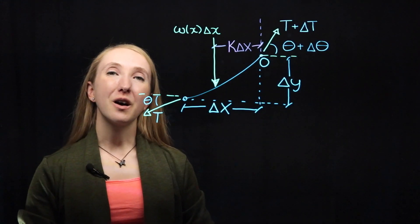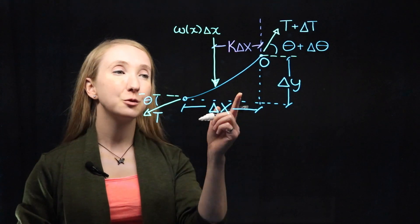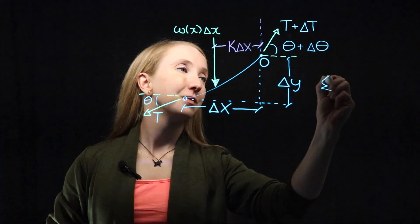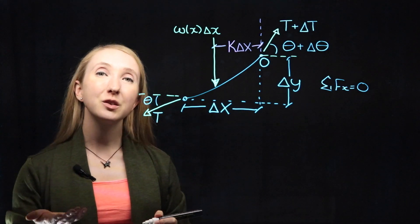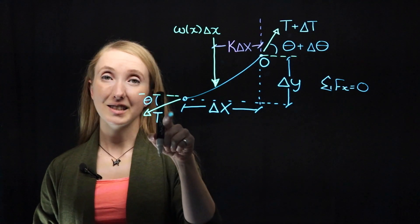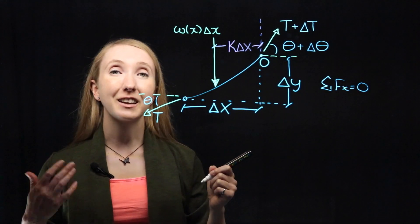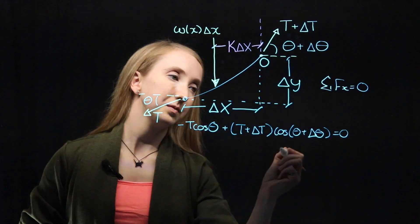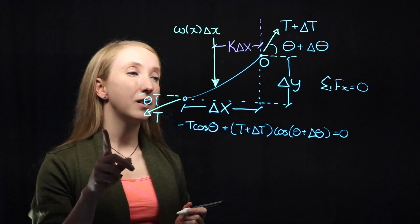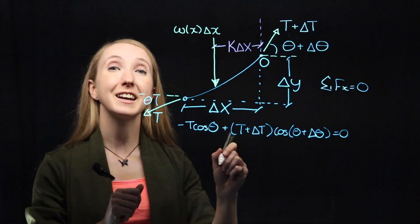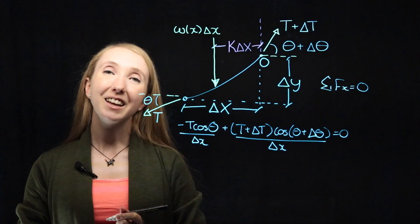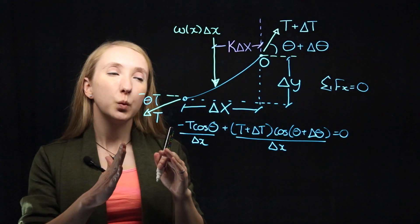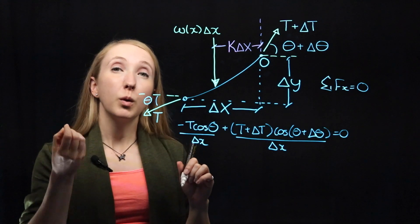We're going to go through our three equilibrium equations using the free body diagram of this cable segment. So starting in the X direction. In the X direction, we have the X component of the tension at this end and the X component of the tension at that end. Now for funsies, I want you to divide everything by our segment length delta X.